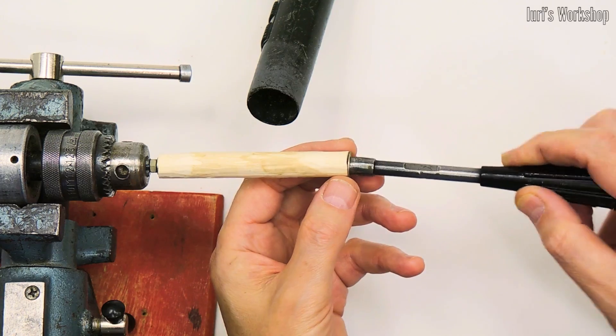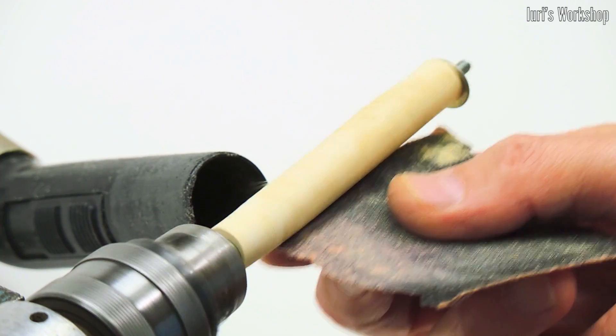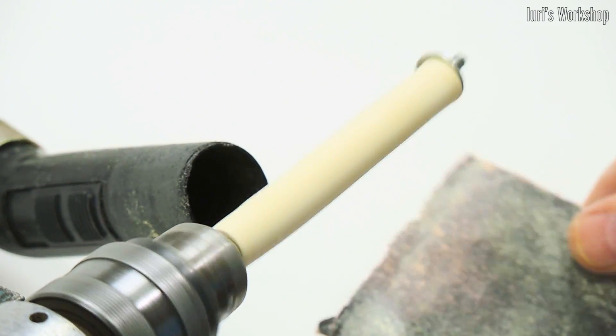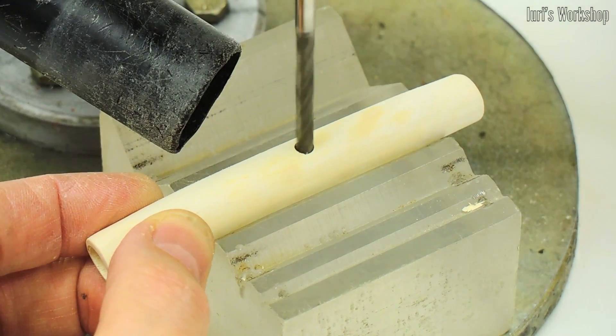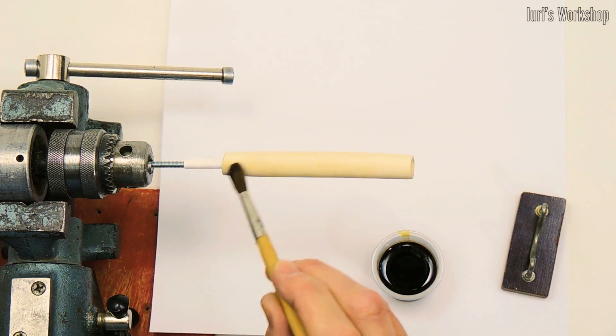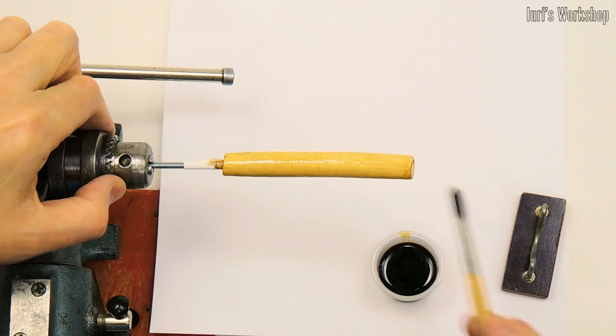Then I removed the bark and sanded the outside of the wooden handle with sandpaper. I also did not forget to drill a hole for the cable attachment point. Finally, I varnished the handle.